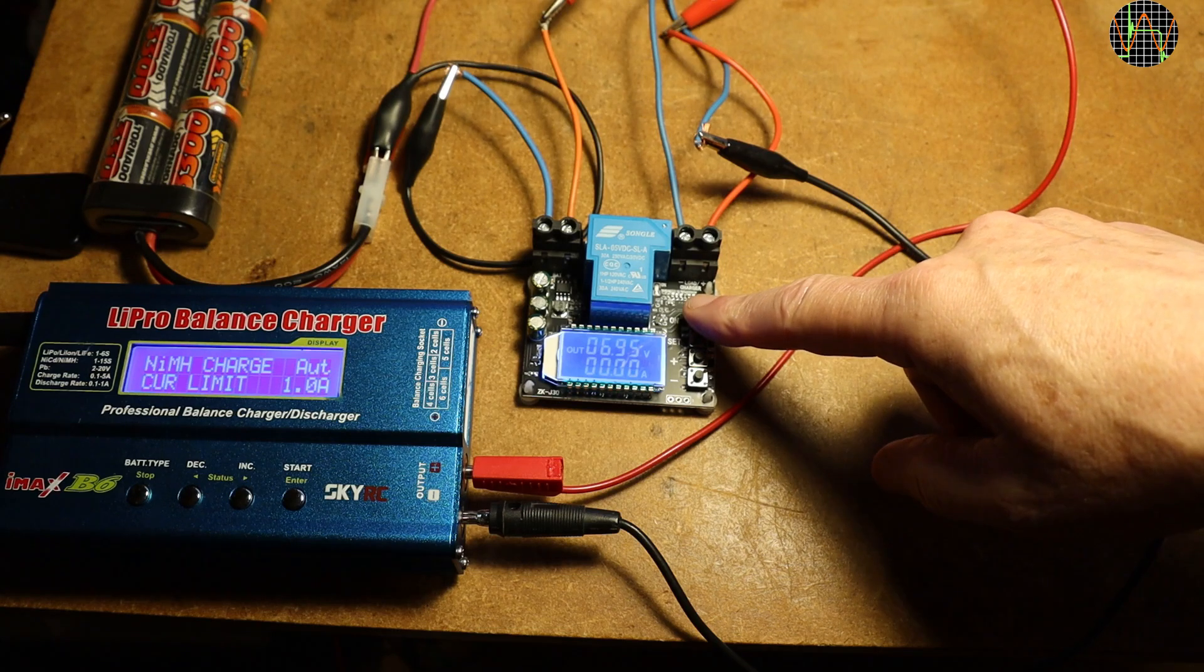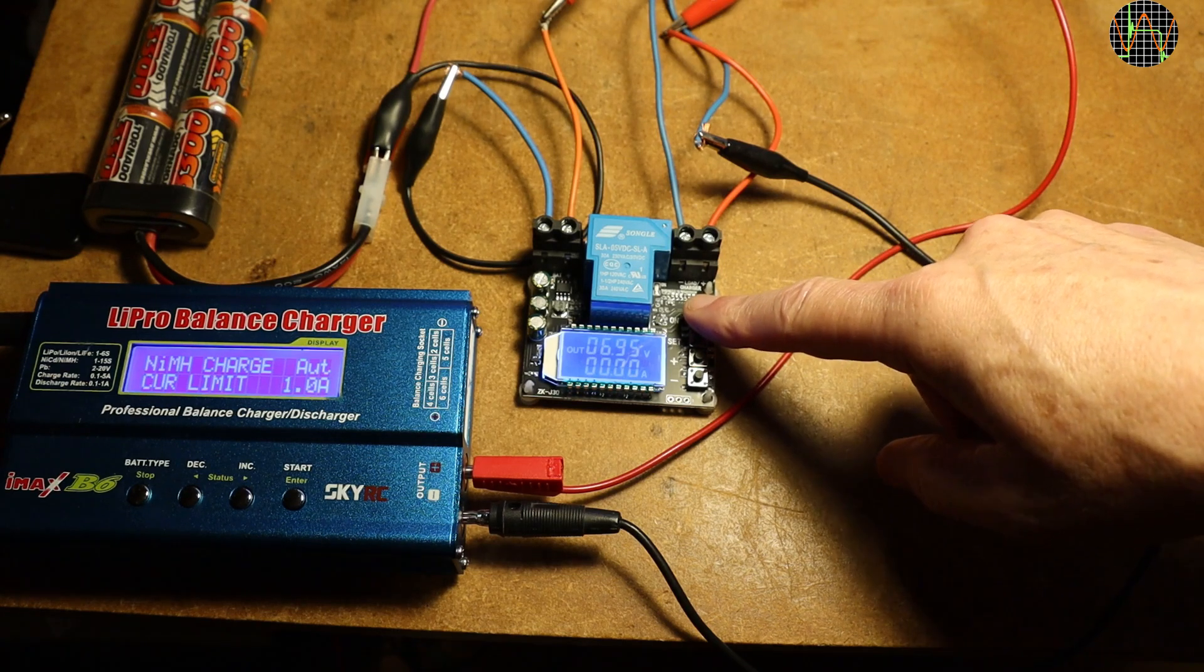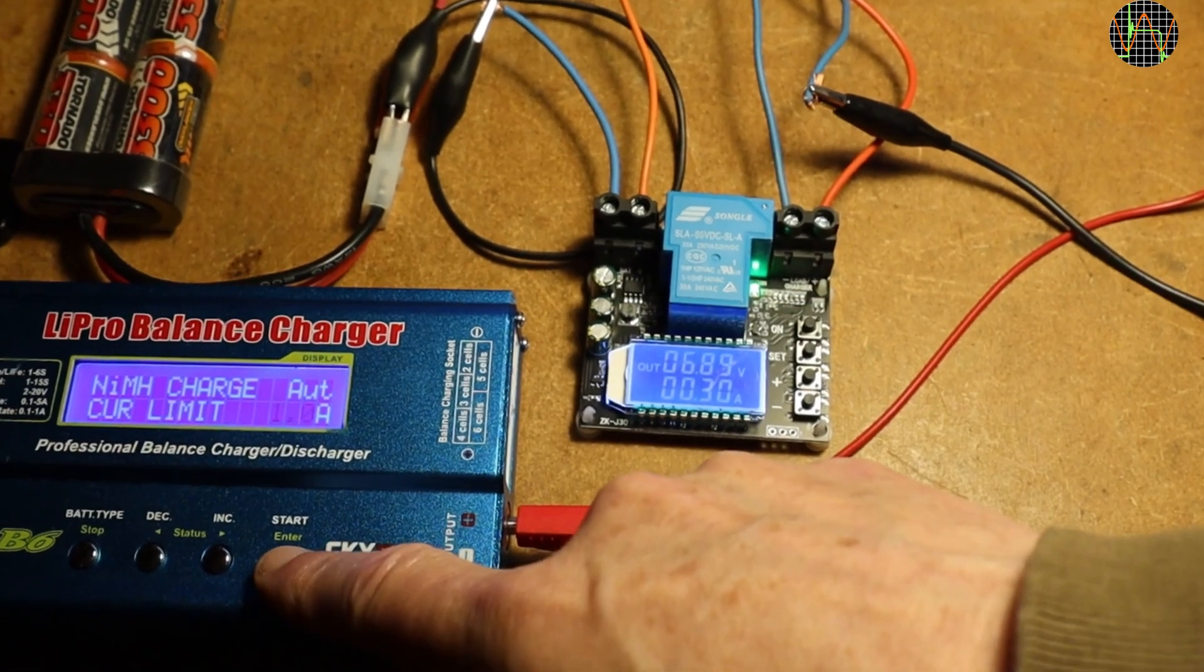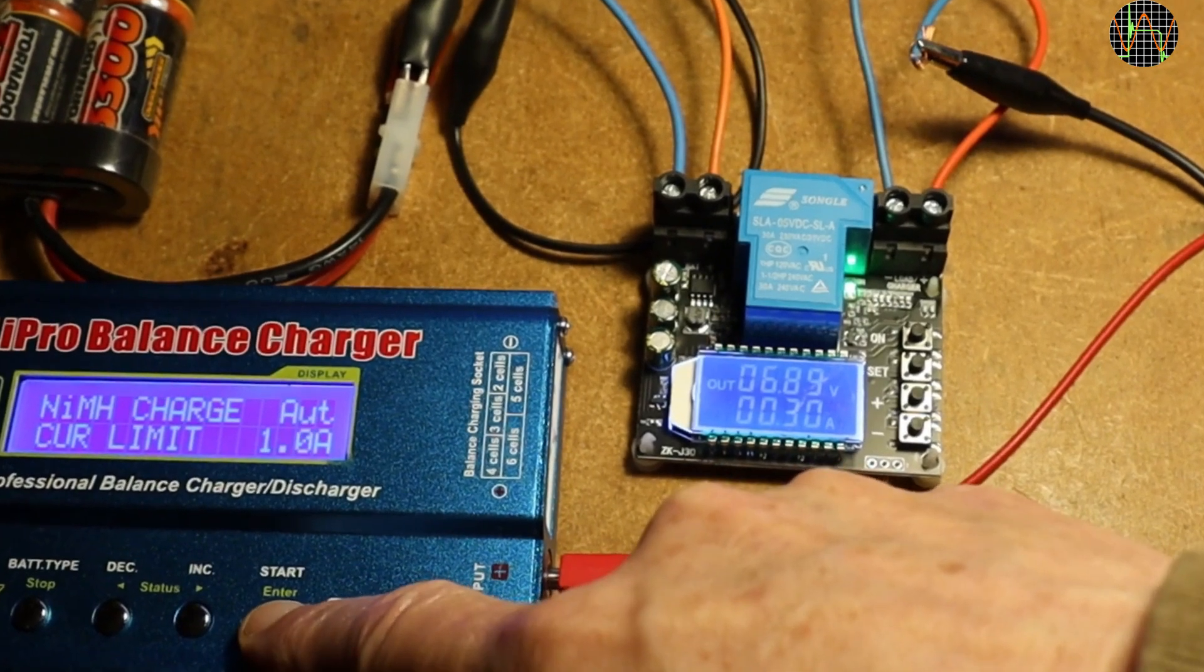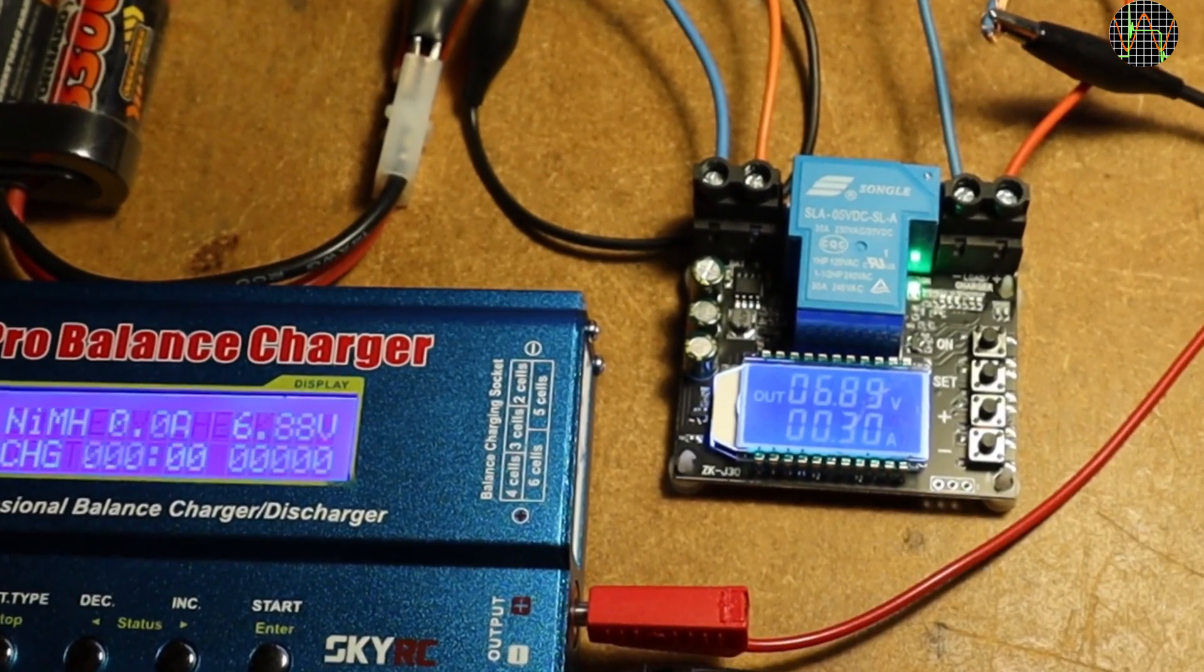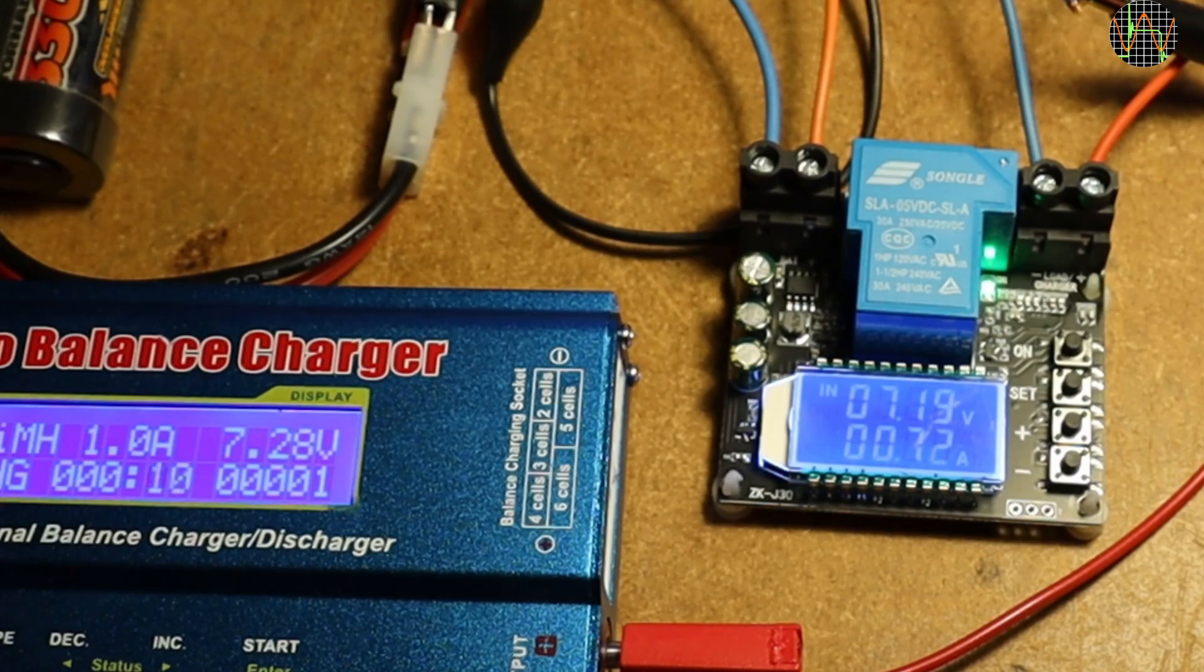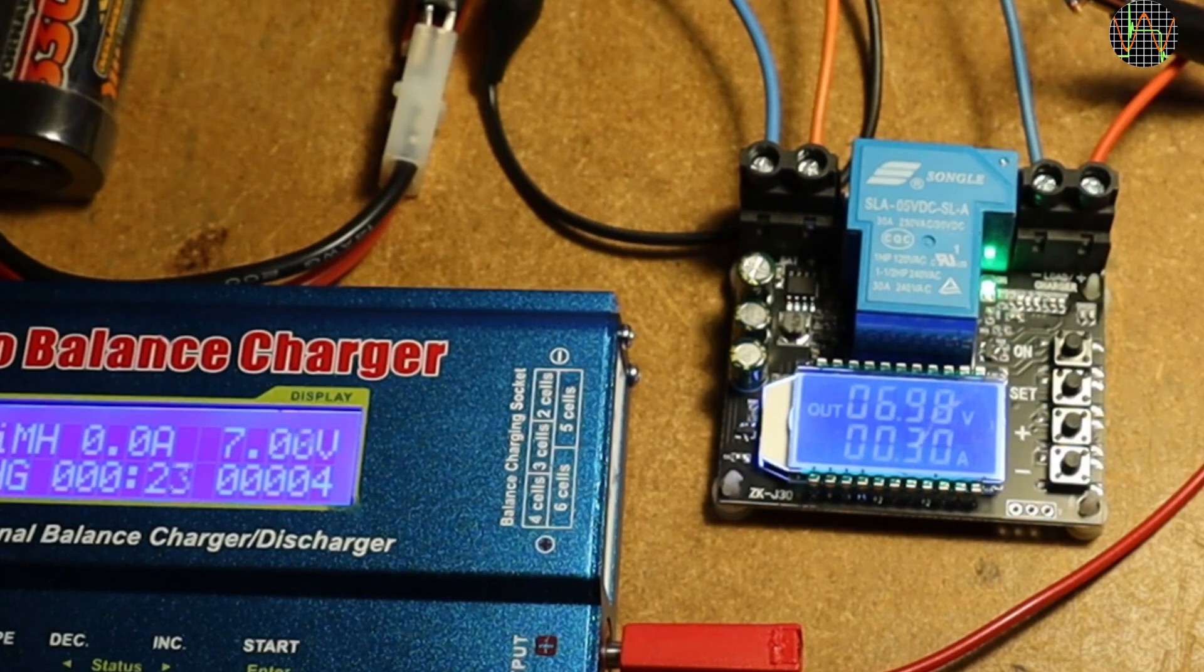I used the board to monitor a nickel-metal hydride battery pack that was at hand with an IMAX B6 charger, although the ZKJ30 is actually meant for lead-acid batteries. This uncovered a few issues. First, although the charger is delivering 1.0A, the module shows only about 740mA. This is because it uses the missing 260mA for itself. In fact, almost all of it just keeps the relay in the ON state, which explains why that relay gets pretty warm after a while.